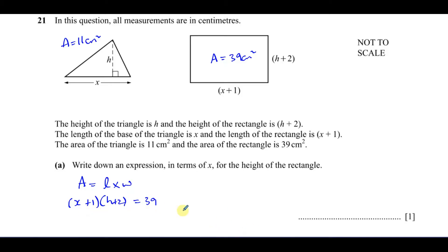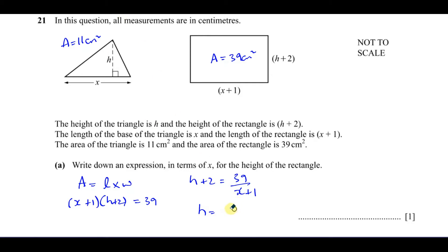To find h, we divide both sides by x plus 1, giving h plus 2 equals 39 over (x plus 1). Then h equals 39 over (x plus 1) minus 2. That expression in terms of x for the height of the rectangle is worth just one mark — part (a) done.